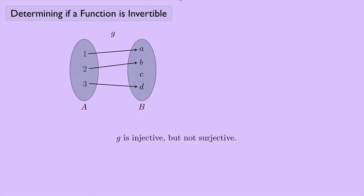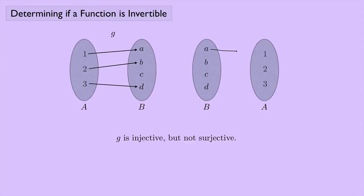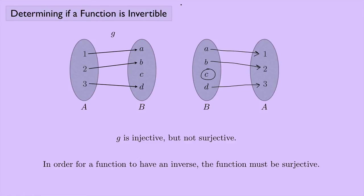Let's try and create an inverse function for this — something going from set B to set A. I see that 1 is mapped to A, so I want A mapped back to 1. 2 is mapped to B, so I want B mapped back to 2. And 3 is mapped to D, so I want D mapped back to 3. But here's the problem: where does C go? So I cannot create an inverse function. In order for a function to have an inverse, the function also must be surjective.